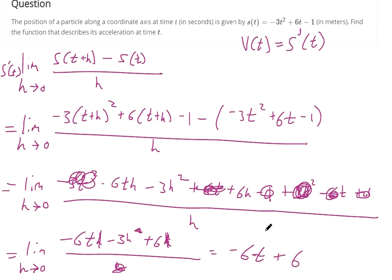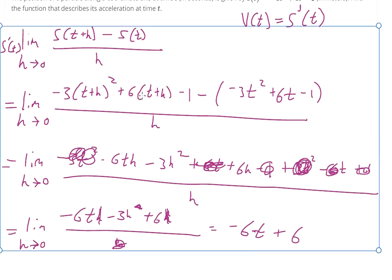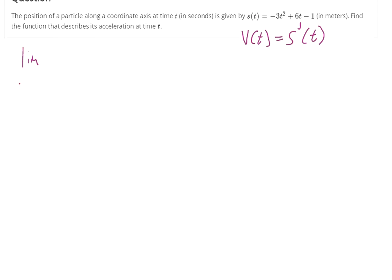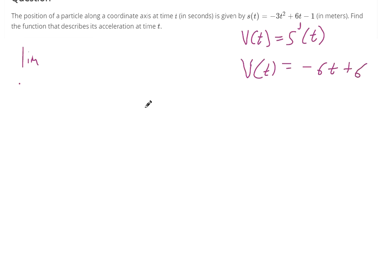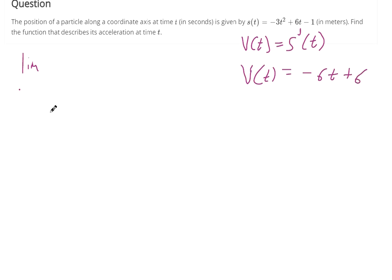So that's our derivative. Velocity, which is the first derivative of the location function, is negative 6t plus 6. But they wanted the acceleration, so we've got to go do that again. The acceleration is the derivative of the velocity — it's all the slopes of the velocity.